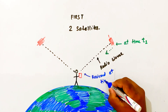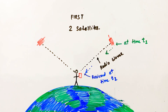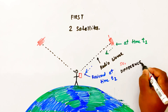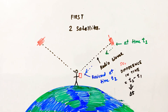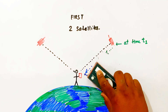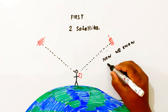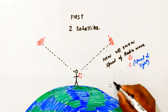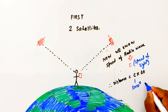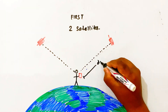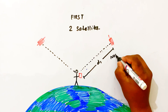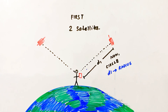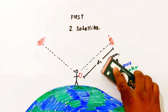The satellite will send a signal at time T1, and the receiver will receive the signal at time T2. So the difference in time is T2 minus T1. The speed of a radio wave is the speed of light. If we know the speed and time, we can calculate the distance D1.